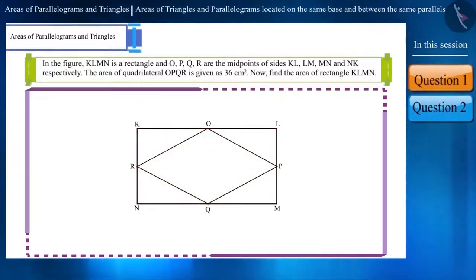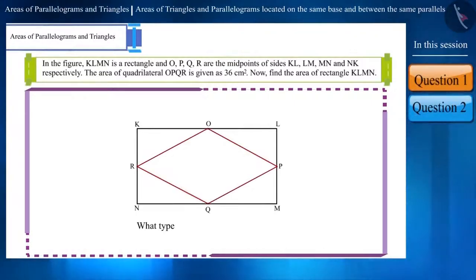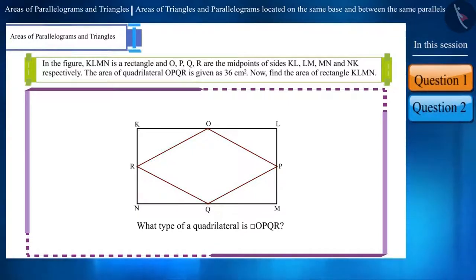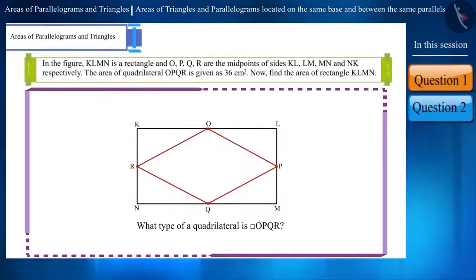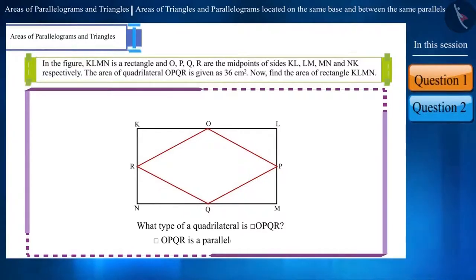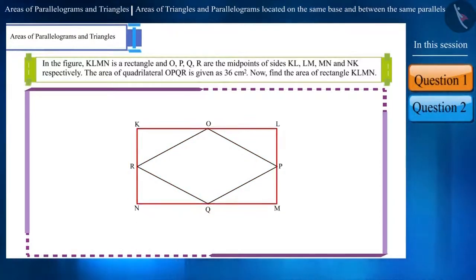Friends, before solving the question, can you tell what kind of a quadrilateral is quadrilateral OPQR? We have studied that the quadrilateral formed by joining the midpoints of a rectangle is a parallelogram. Therefore, quadrilateral OPQR is a parallelogram and we have to find the area of rectangle KLMN.